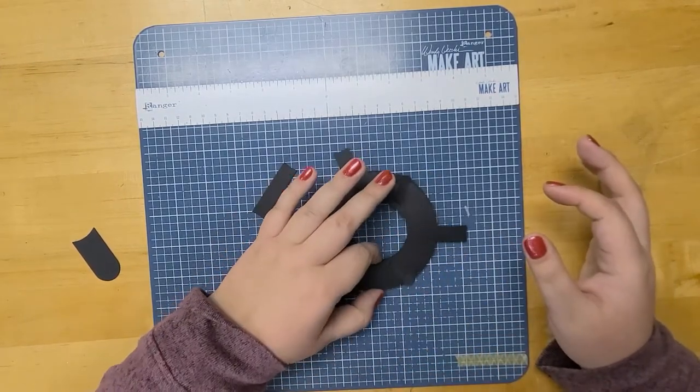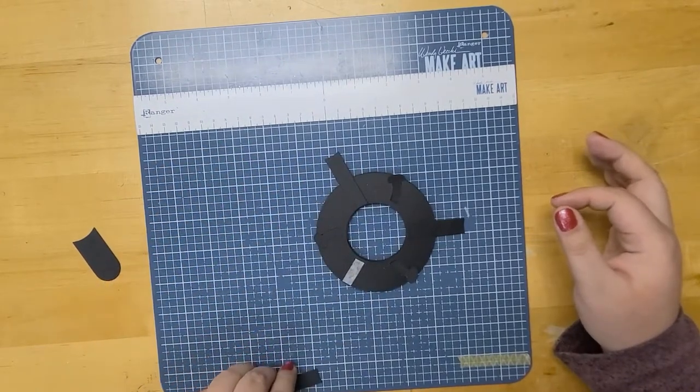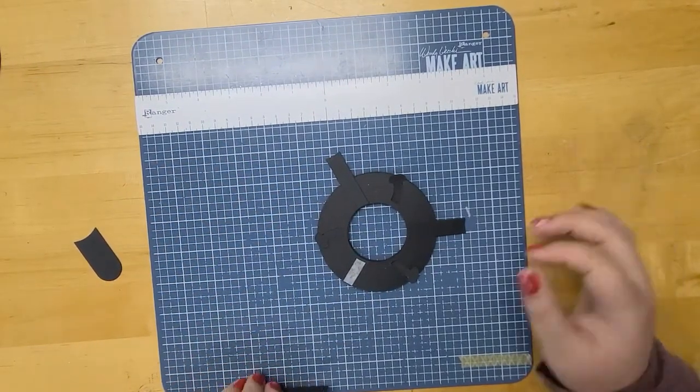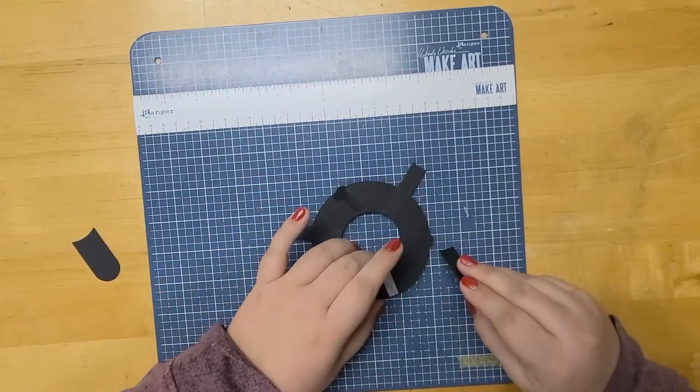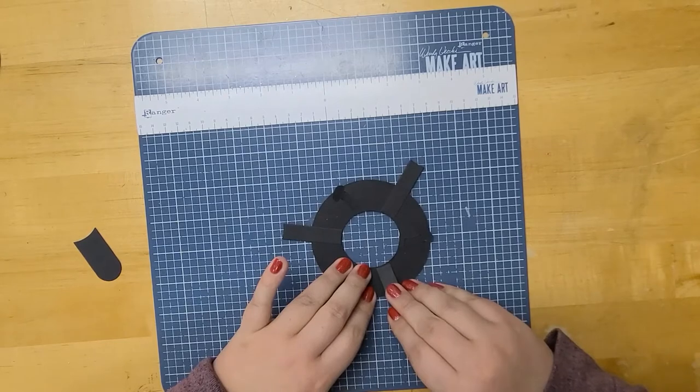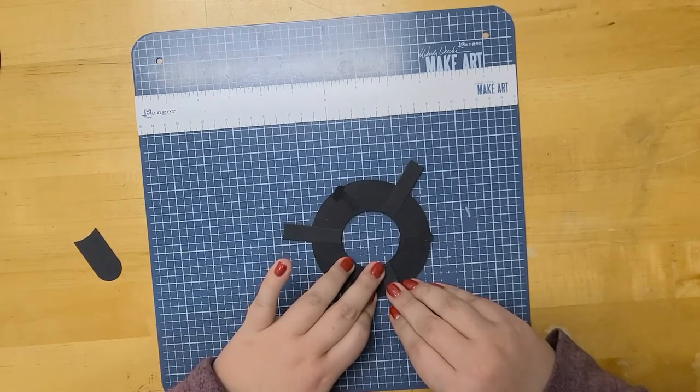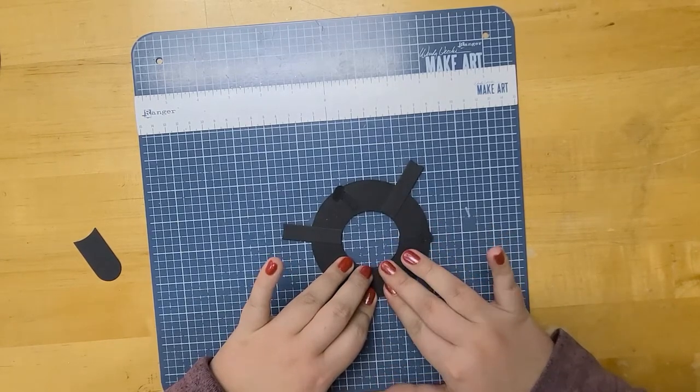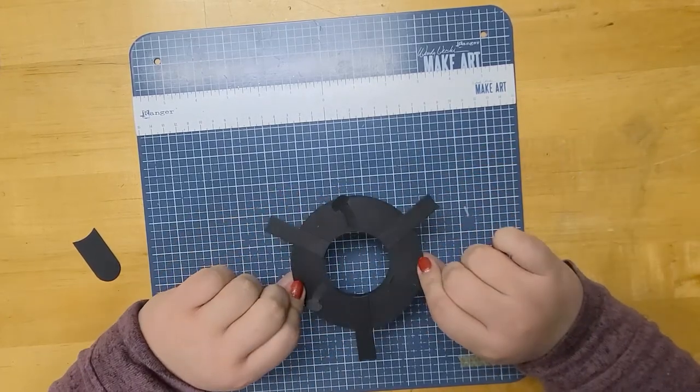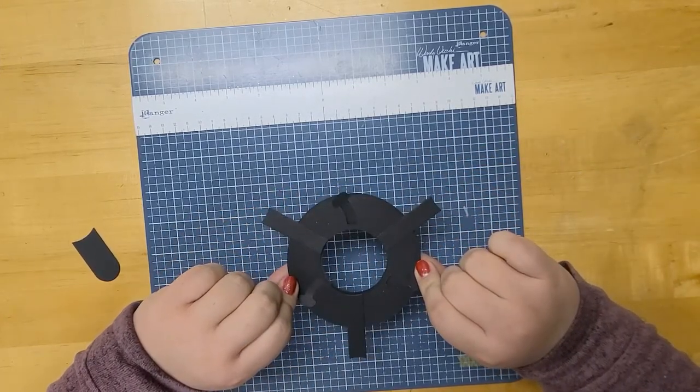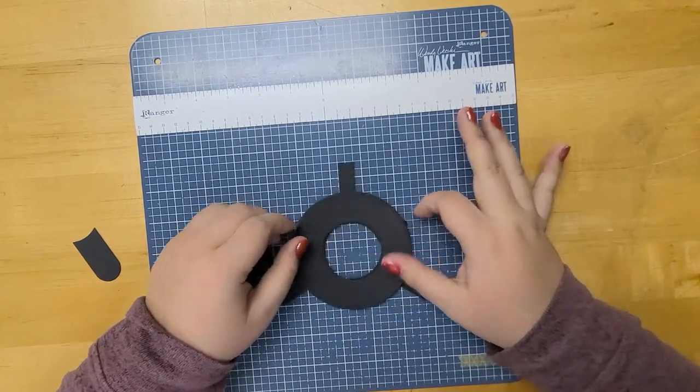One thing I would like to point out when you're working with the magic iris, you do not want to use a liquid adhesive. If any were to get on any piece where it's not supposed to be, it can stop the magic iris from working. Okay, now I have my stabilizers attached to the back. I'm going to go ahead and flip it over.